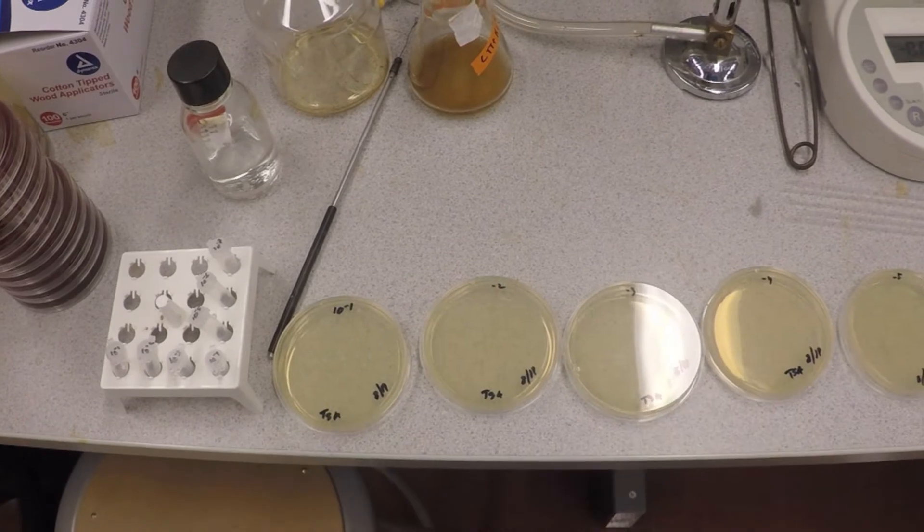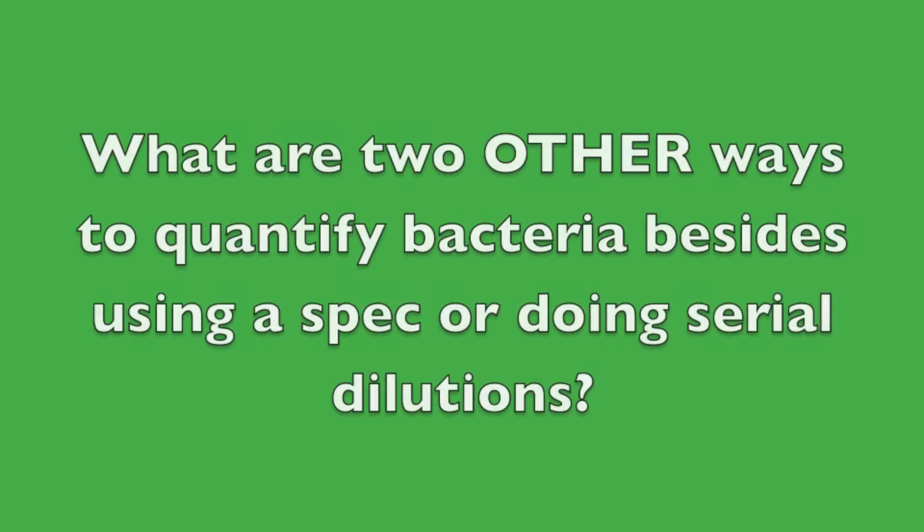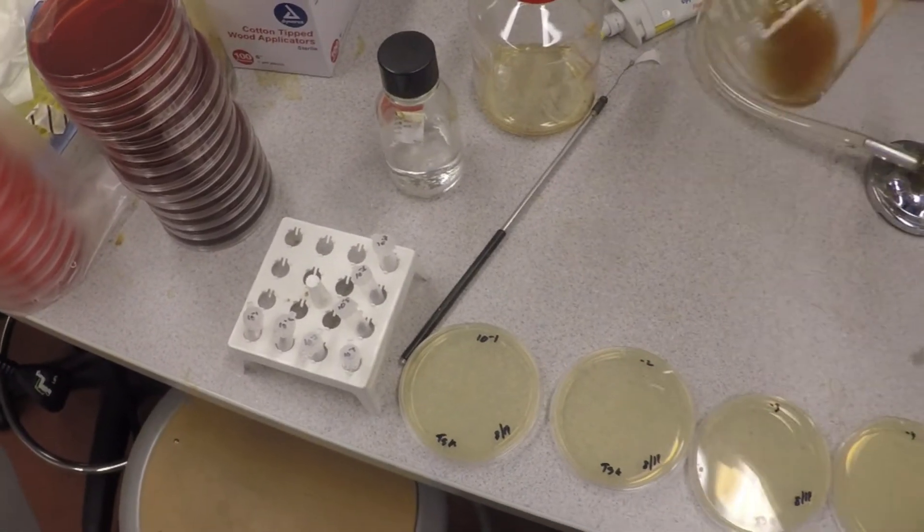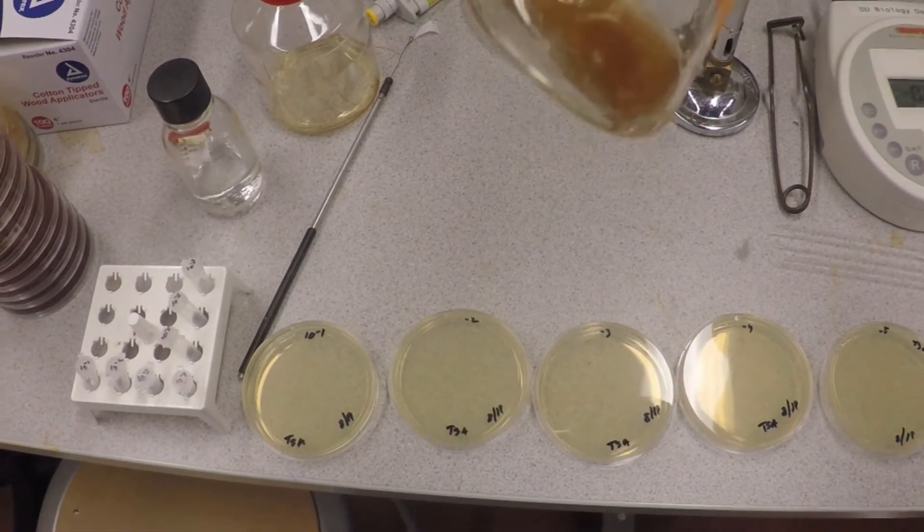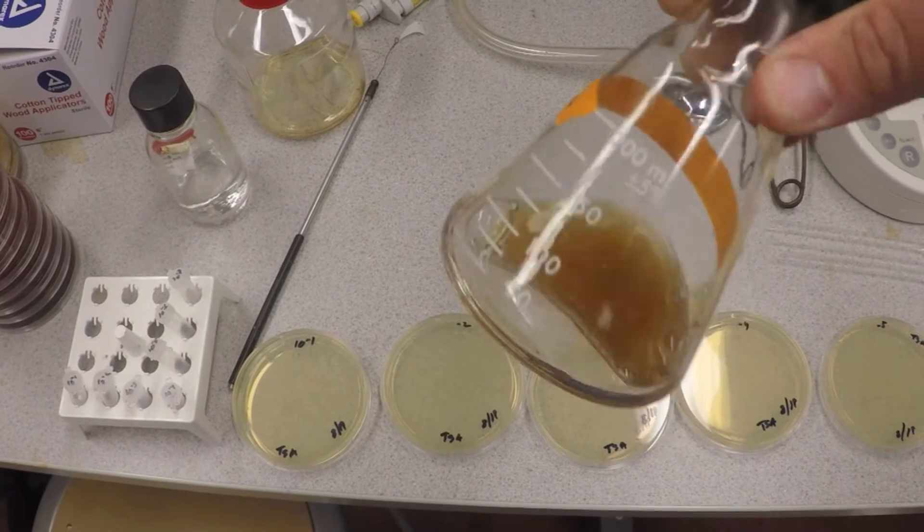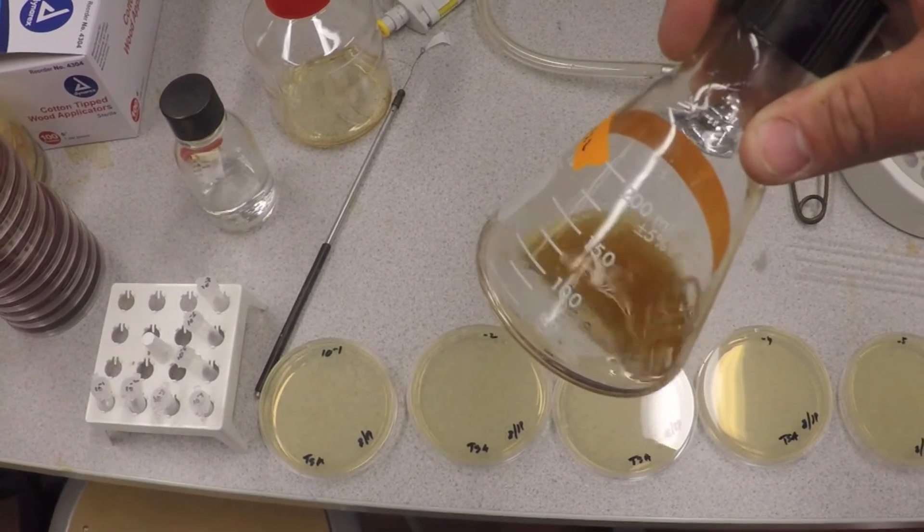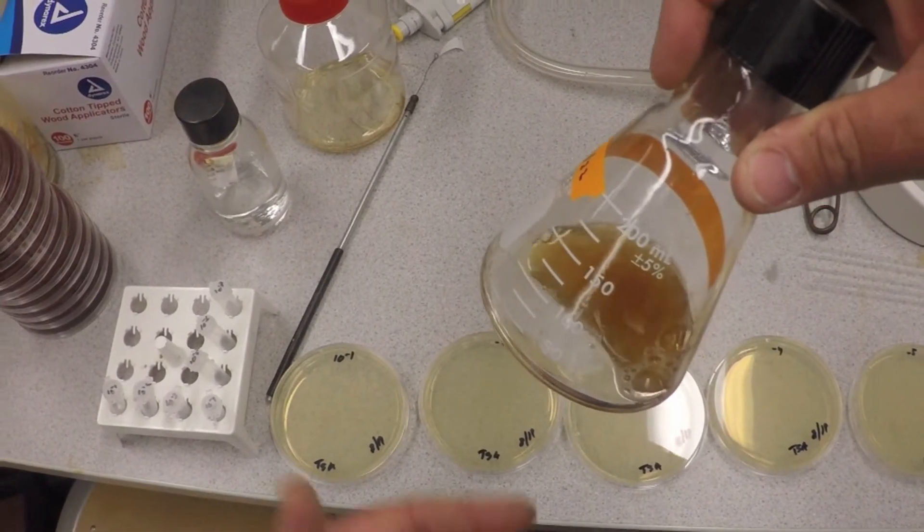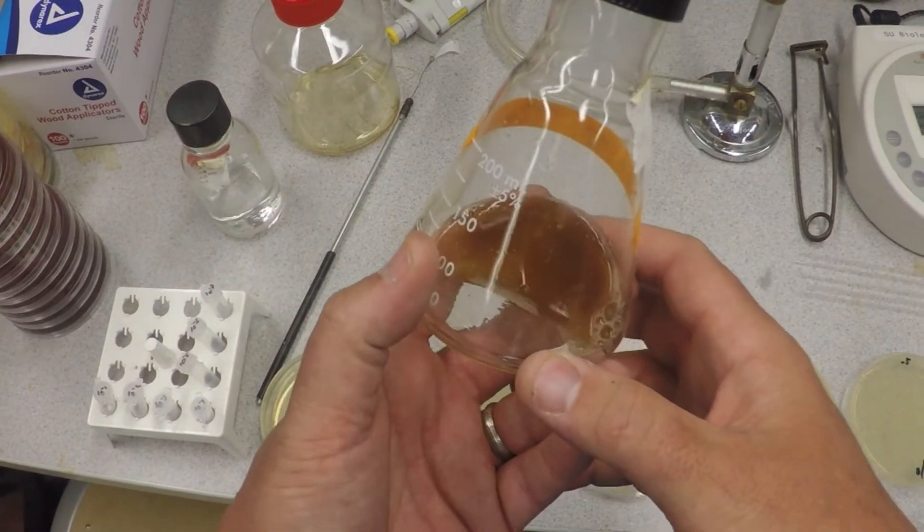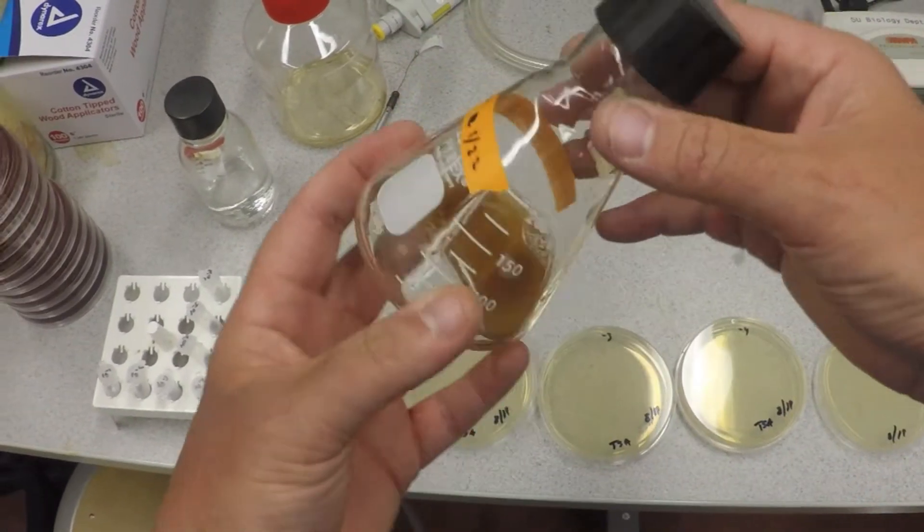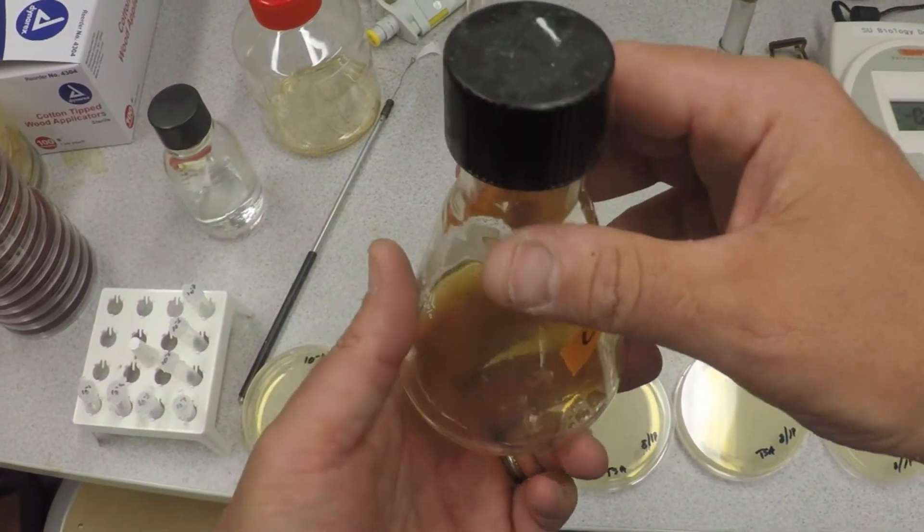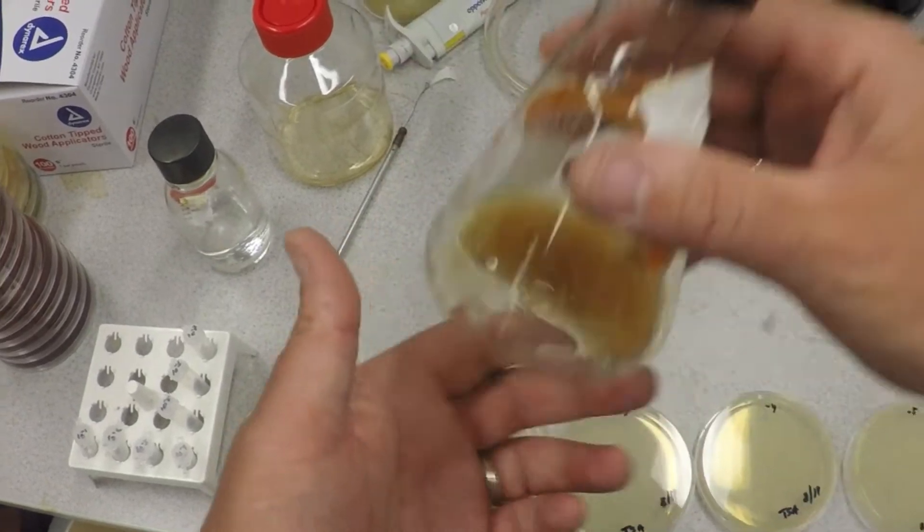This will be something you're going to be doing when you do your growth curve, for example. First things first - you've got this lovely sample, it's full of bacteria, it's nice and turbid, meaning that it's very cloudy. We want to know how many cells are in there. If you just plate this out directly onto a plate, you're just going to get what's called a lawn of bacteria, but you're not going to count them. You want to count individual colonies.